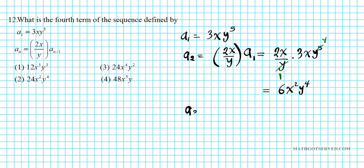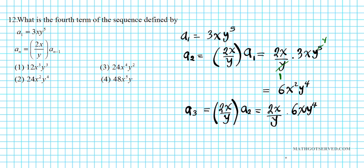Next, A₃ = (2x/y) × A₂ = (2x/y) × 6x²y⁴. One factor of y cancels, giving 2 × 6 = 12. But with the x terms, it's actually 12x³y³. Quick correction: that should be 12x³y³.